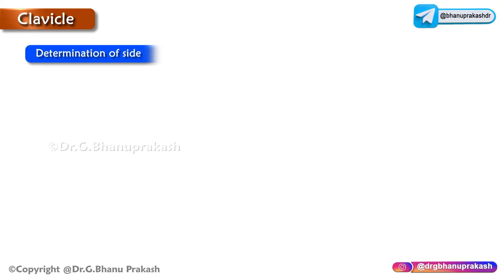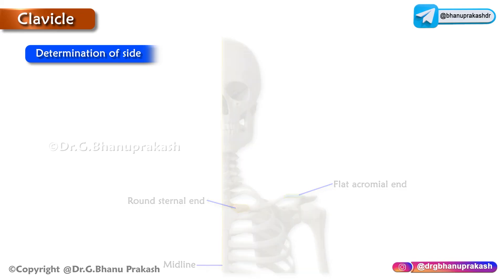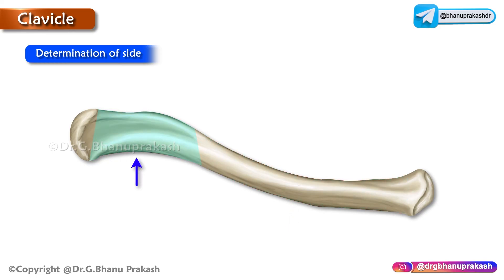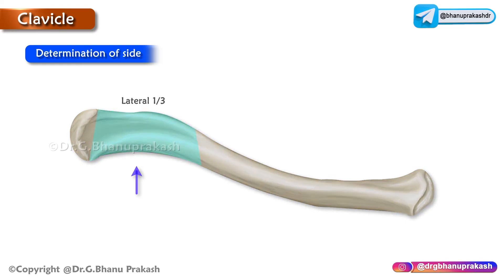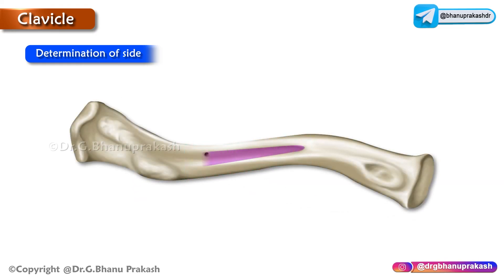To determine the side: the flattened acromial end is on the lateral side and the rounded sternal end is on the medial side. The shaft is convex forwards in the medial two-thirds and concave forwards in the lateral one-third. The middle one-third of the inferior surface is grooved.